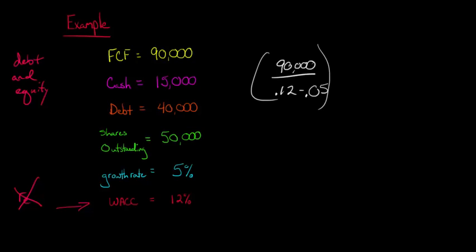So now we're going to add in that cash, that $15,000 cash, and then we're going to subtract out the $40,000 in debt, and then in our denominator we're going to have the number of shares outstanding.